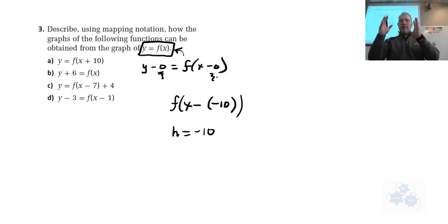Now that means that the whole graph moves to the left 10 units. So which coordinate is moving then? If it's moving left or right, it's the which coordinate? The y or the x? It's the x coordinate, right? And this number is inside the brackets with the x. So that's how you know that it's moving it.